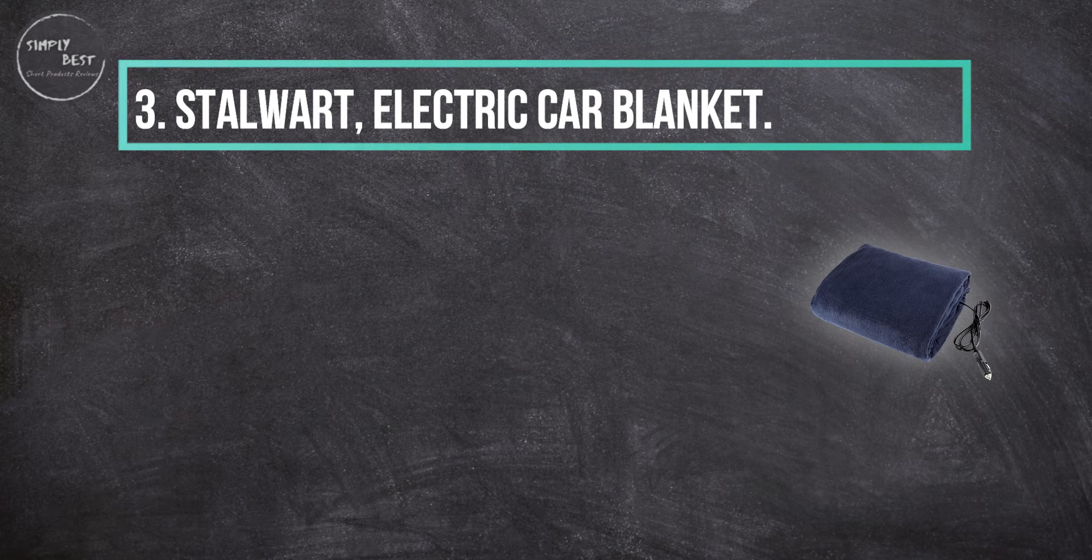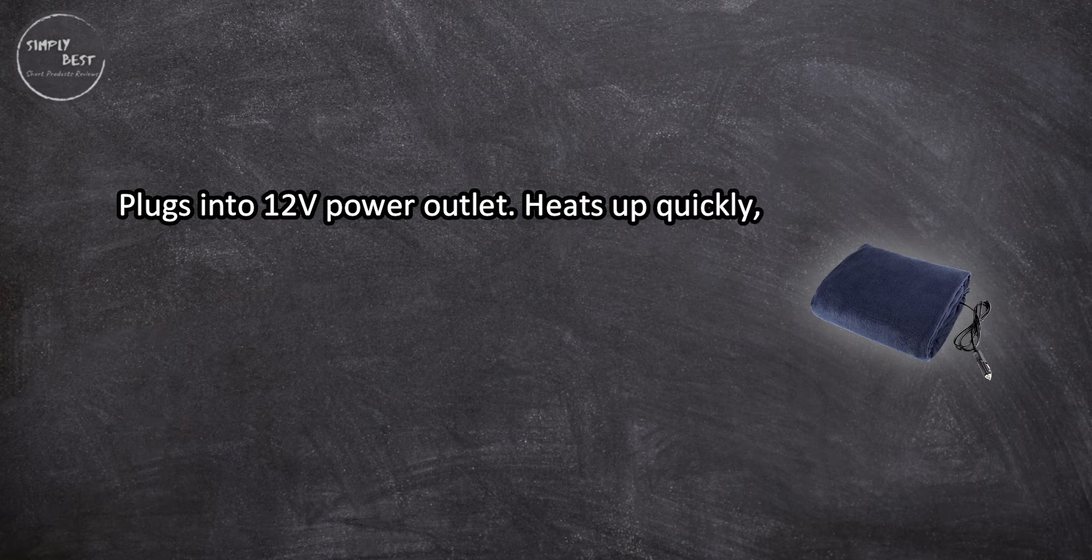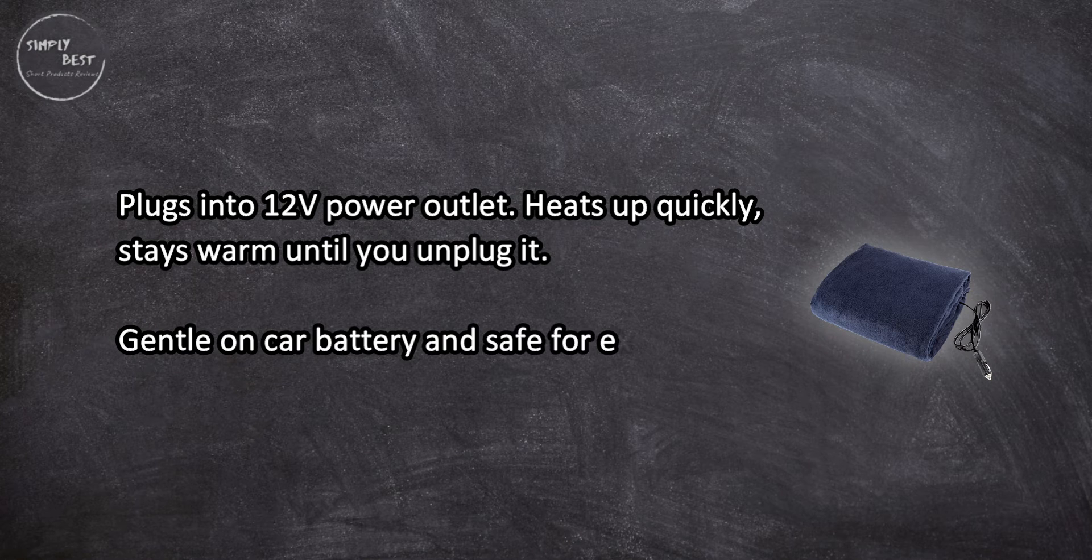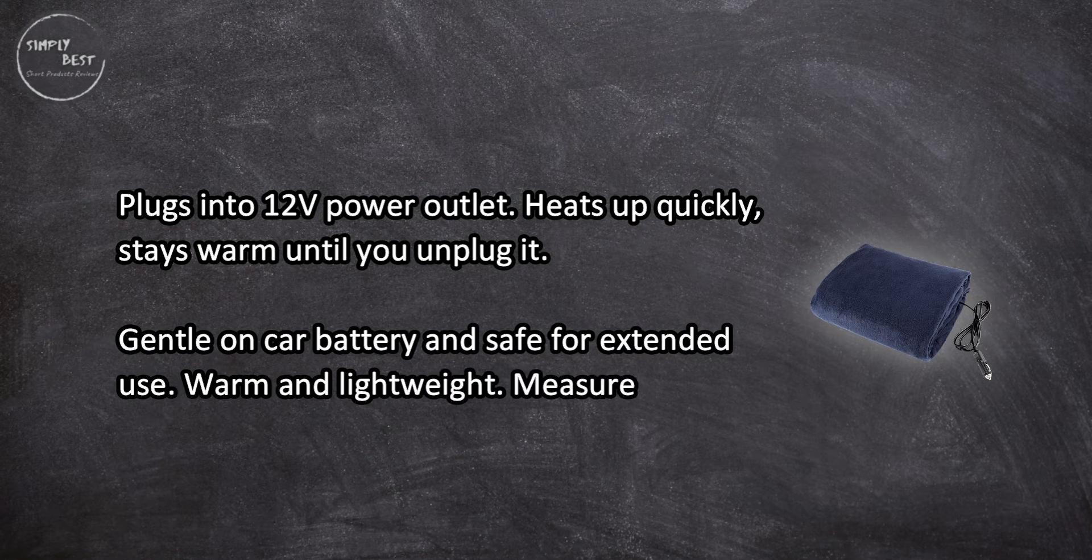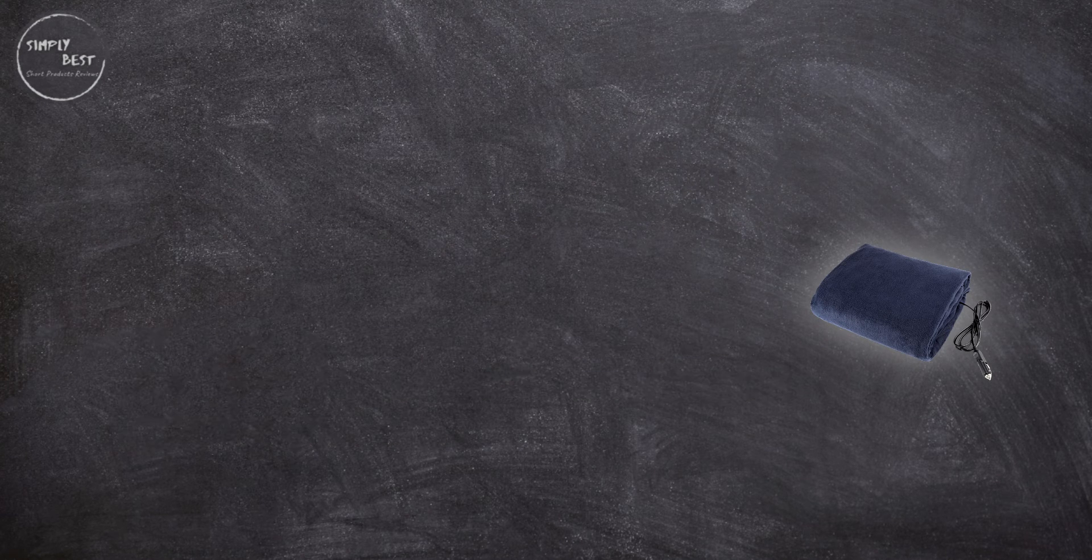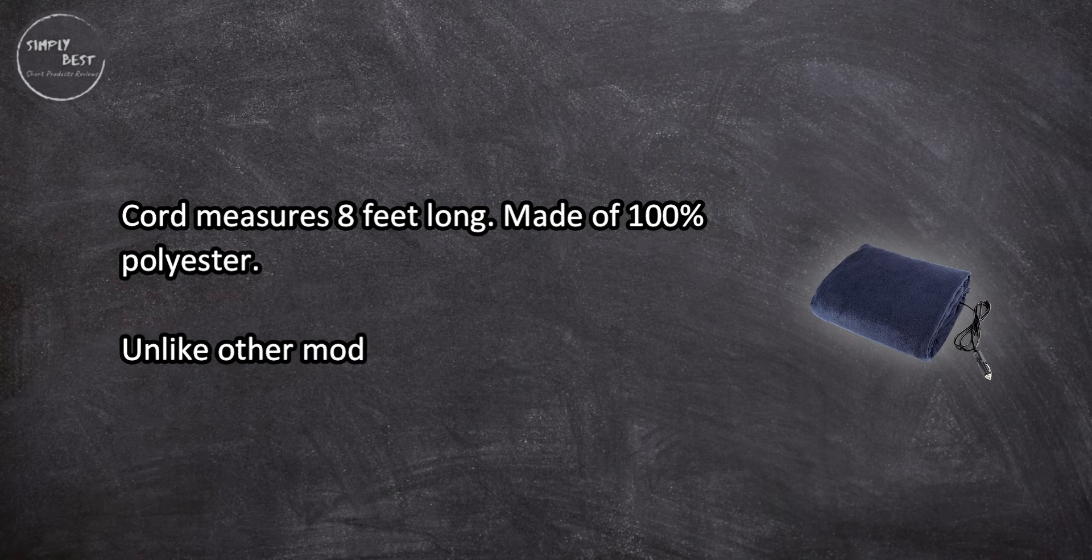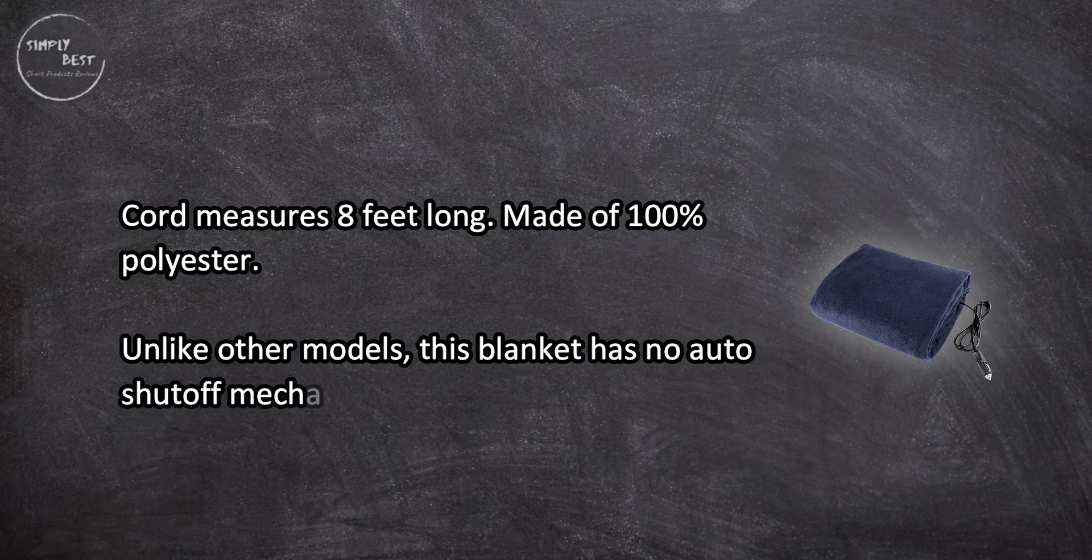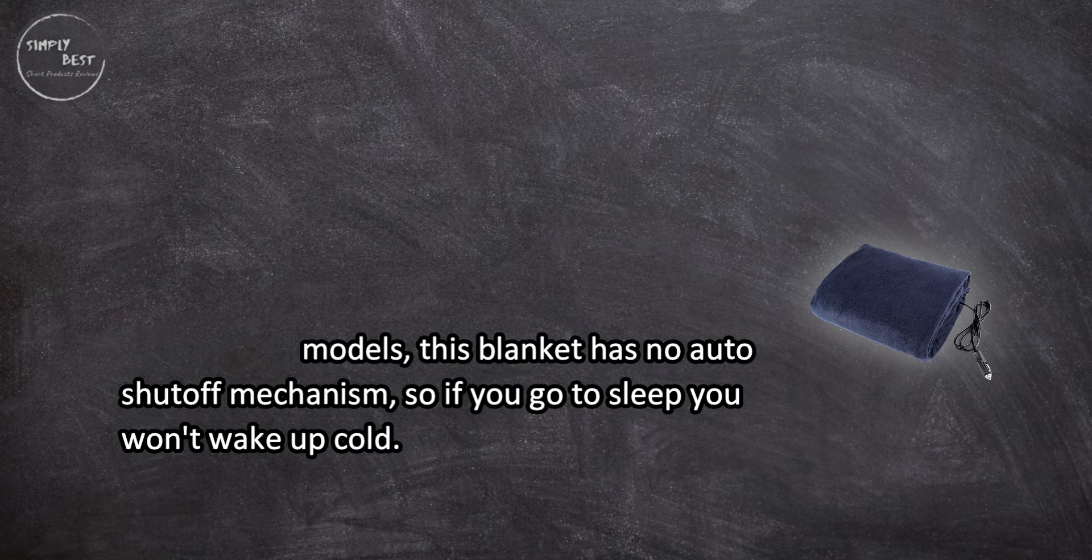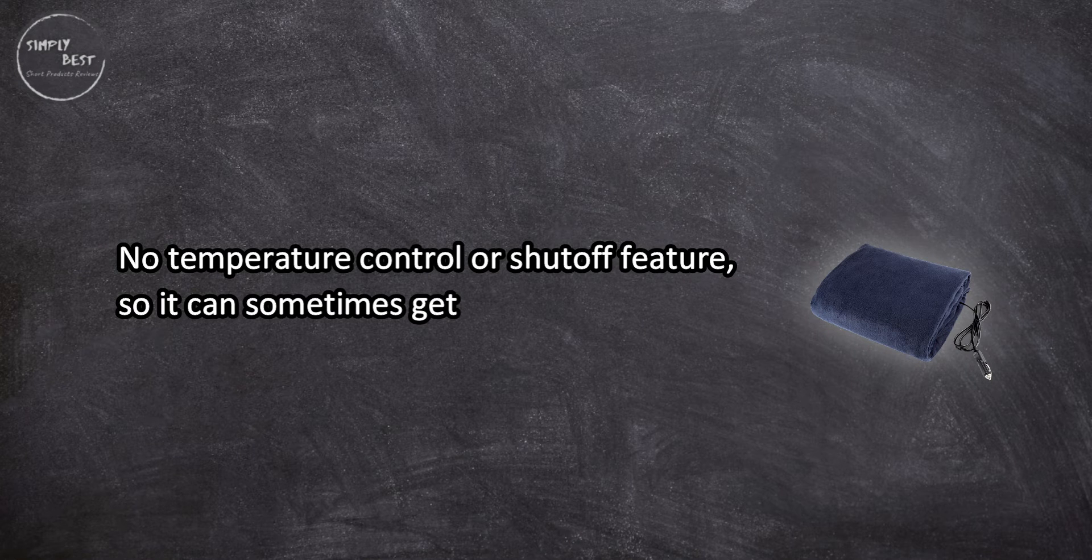Stalwart Electric Car Blanket plugs into 12V power outlet, heats up quickly, stays warm until you unplug it. Gentle on car battery and safe for extended use. Warm and lightweight, measures 59 inches long by 43 inches wide. Cord measures 8 feet long, made of 100% polyester. Unlike other models, this blanket has no auto shut-off mechanism, so if you go to sleep you won't wake up cold. However, no temperature control or shut-off feature means it can sometimes get too hot.